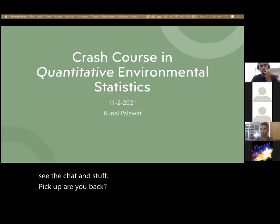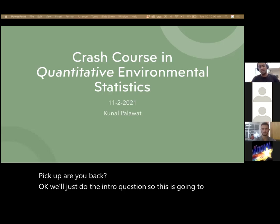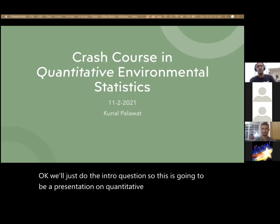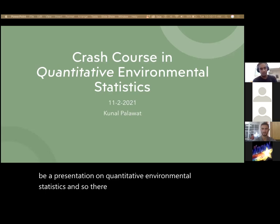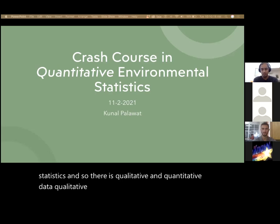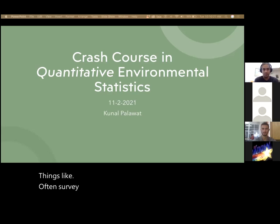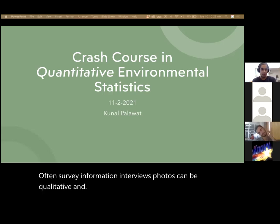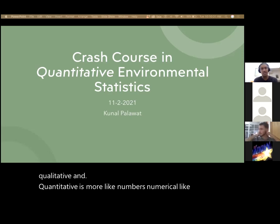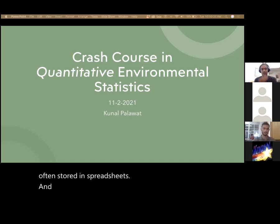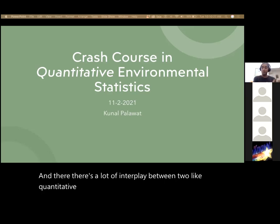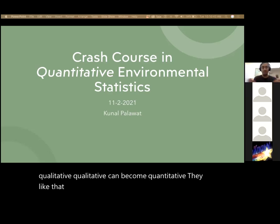We'll just do the intro question. This is going to be a presentation on quantitative environmental statistics. There's qualitative and quantitative data. Qualitative includes survey information, interviews, and photos. Quantitative is more like numbers — numerical, often stored in spreadsheets. There's a lot of interplay between the two; quantitative can become qualitative and vice versa. That binary isn't really real and is only sometimes useful.